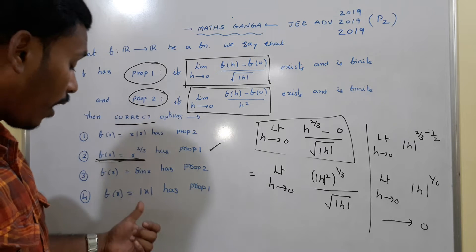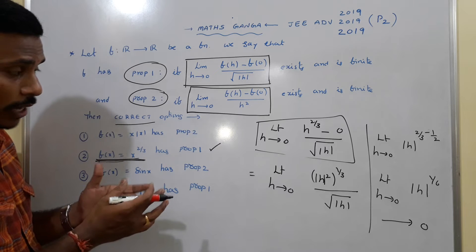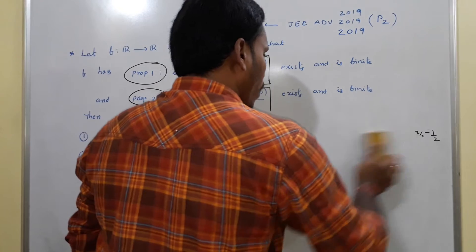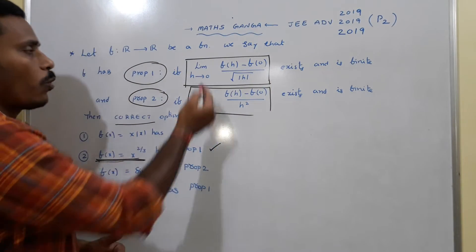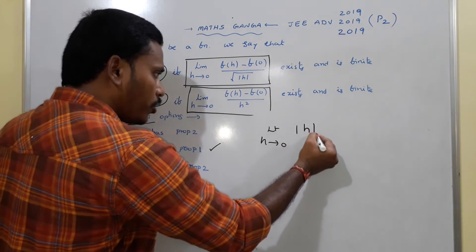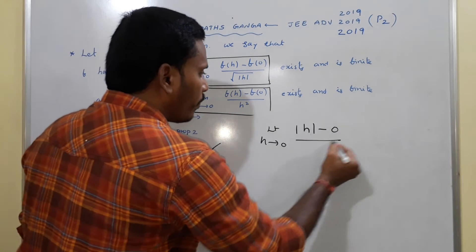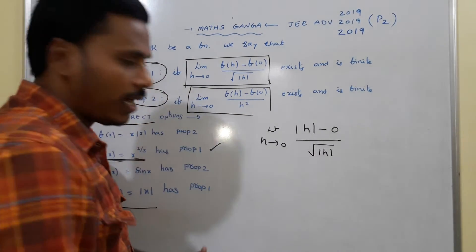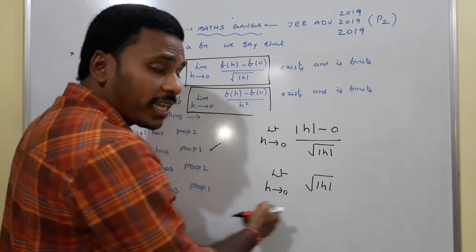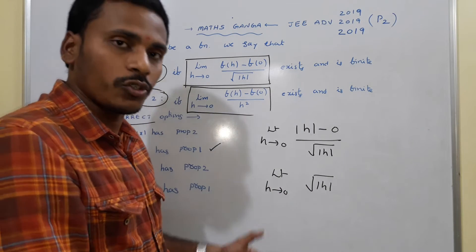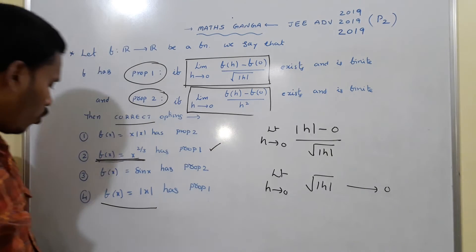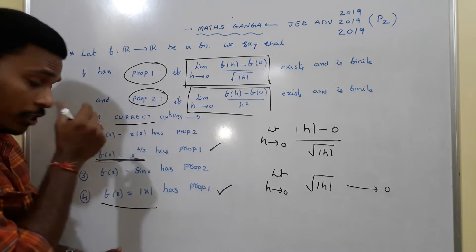Now I check whether Option 4, f(x) = |x|, satisfies Property 1. We evaluate limit h tends to 0 of [|h| − 0] / √|h|, which simplifies to limit h tends to 0 of |h| / √|h| = √|h|. Since h tends to 0, |h| tends to 0, and √|h| tends to 0. So this limit is also 0 — it exists and is finite. Therefore Option 4 is also correct. Both Option 2 and Option 4 satisfy Property 1.